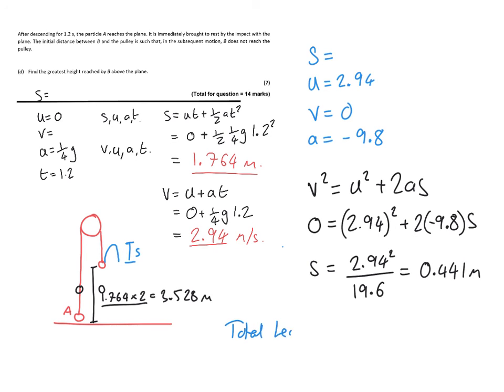We find a distance, S, as being 0.441 metres, and we add all of these numbers together. Because the question is really clear. Find the greatest height reached by B above the plane, above the ground. It rounds to 4.0 metres, and that's the end of the test.